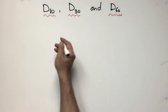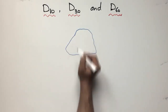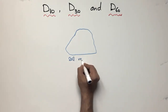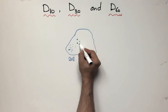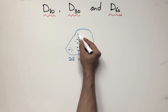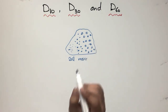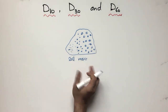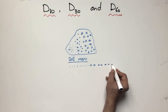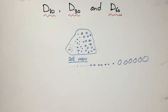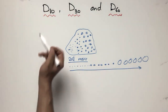These parameters are used to define the particle size distribution in a soil sample. Consider any soil mass — it contains different particle sizes ranging from finer, small particles to medium size particles and then coarser particles. A soil mass always consists of different particle sizes; it is very rare that a soil mass consists of only one particle size.